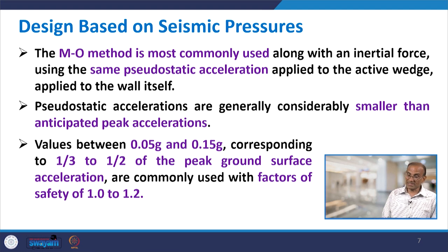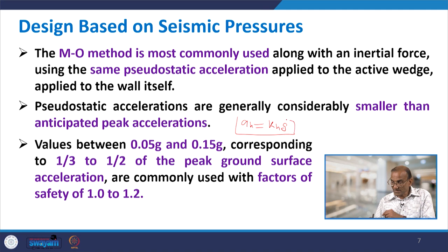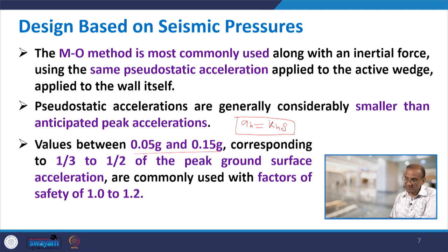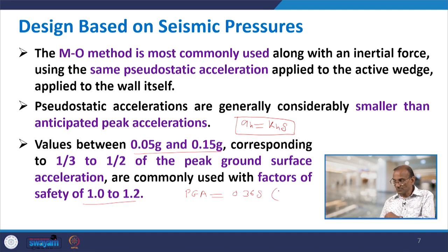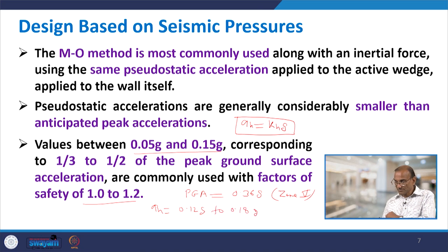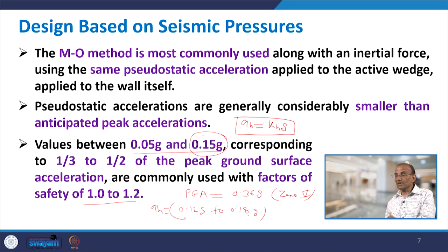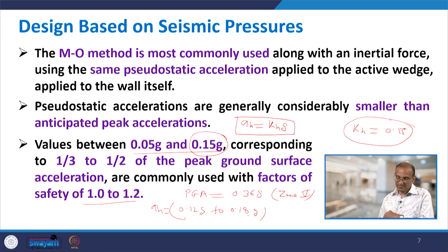The horizontal pseudo-static acceleration AH equals KH times G. AH is considered between 0.05 to 0.15 G, corresponding to one-third to one-half of the PGA, and is commonly used with a factor of safety of 1 to 2. For example, in seismic zone 5, the typical PGA is around 0.36 G. One-third to one-half of that gives 0.12 to 0.18 G, with an average of 0.15 G — so KH = 0.15 is recommended for seismic zone 5.